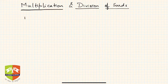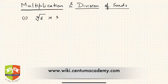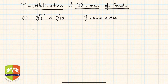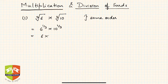The process is very similar, so let us take some examples and understand. Let us say we have to multiply the third root of six with the third root of ten. If you notice, both surds are of the same order — both are third order. When surds are of the same order it becomes very easy to multiply. We can write this as six to the power one-by-three into ten to the power one-by-three, and then use the laws of exponents.